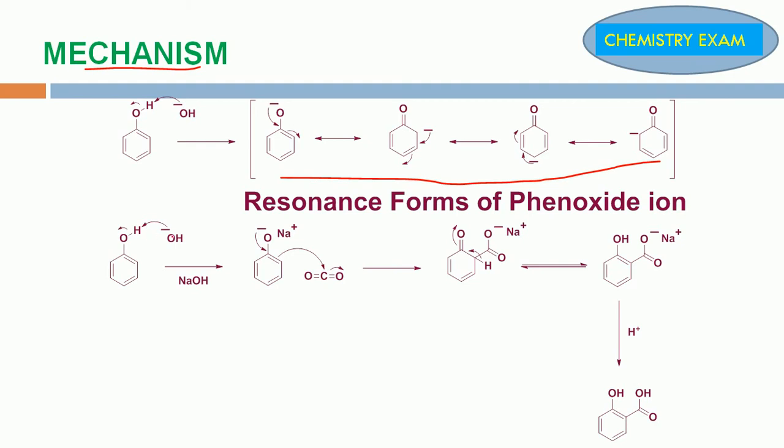The first step: base removes proton from phenol to form phenoxide ion. This phenoxide ion reacts with weak electrophile like carbon dioxide to form this intermediate.